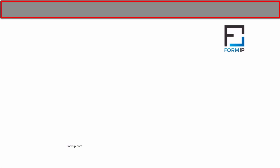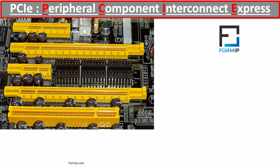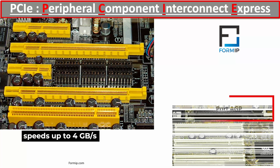Now let's move on to the PCI Express port, which is the latest version of bus slots. It is, of course, faster than its predecessor, with speeds of up to 4 gigabytes per second. Unlike standard PCI, which transfers data in parallel, PCI Express transfers data serially. This is much faster than parallel because the serial data is transferred in packets.